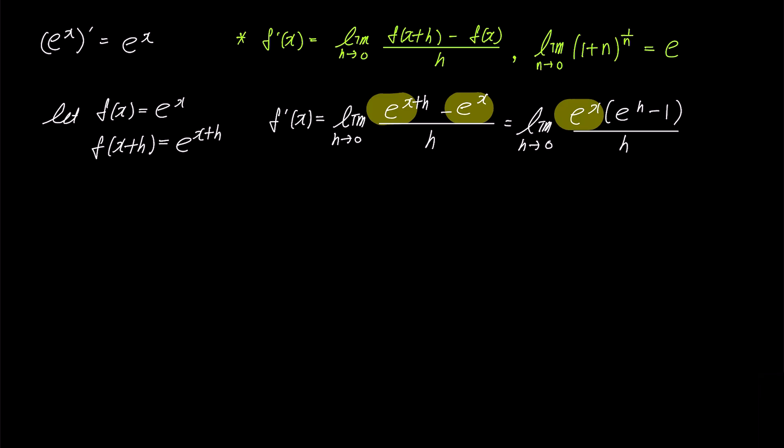Since this limit condition involves h approaching 0, the variable x is independent of h, allowing us to bring e to the power of x outside the limit. Therefore, we have e to the power of x times the limit of e to the power of h minus 1 over h.